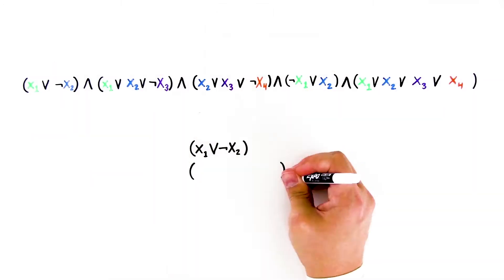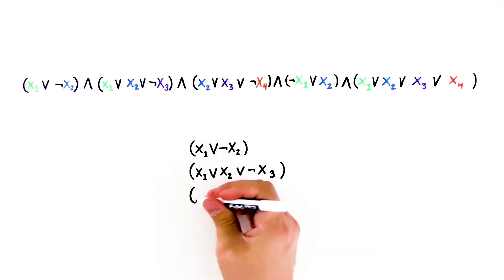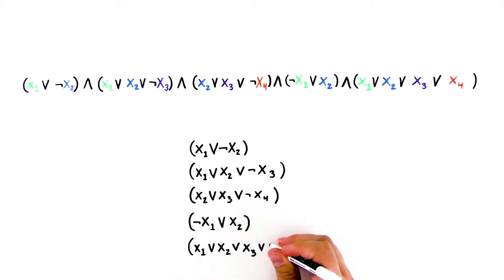The operators within each clause are a logical OR, and the operators between the clauses are a logical AND. We must solve for the variables such that all clauses equal 1.